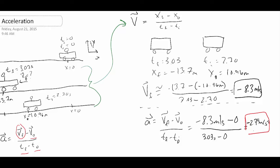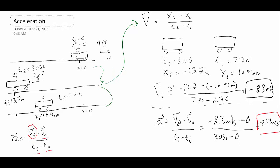Let's check a couple of things. First, units: we have meters per second on top and seconds on the bottom, giving meters per second divided by seconds, which is meters per second squared — our units are correct. The minus sign indicates acceleration to the left, which makes sense because we started with no speed and then increased speed to the left. That's why we get negative acceleration, which also matches our negative velocity.